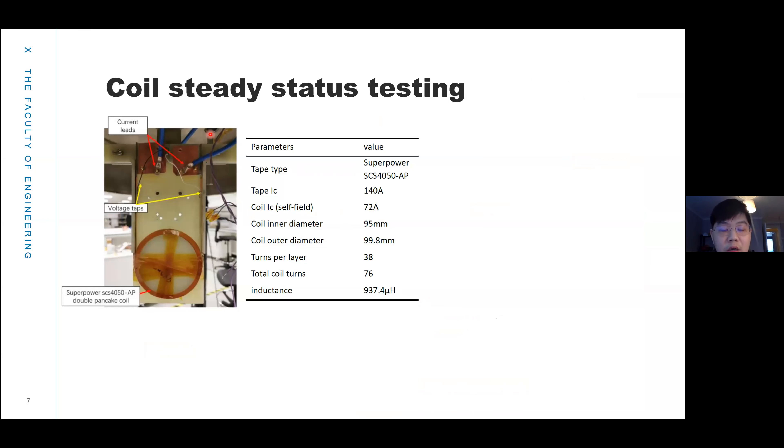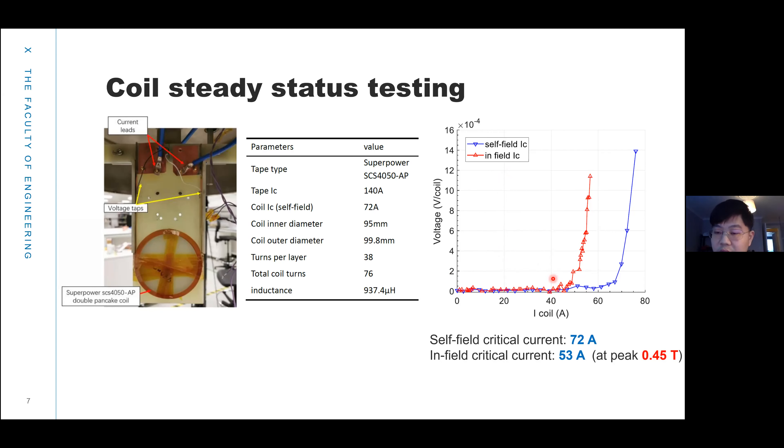This is the stator coil prepared for testing. It has 76 turns for the stator coil. The self-field critical current is 72 amps and the in-field critical current is 53 amps at a peak of 0.45 tesla.